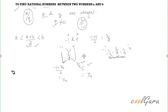For example, we have to find say 5 rational numbers between 3 and 4. So what I will do, I will simply multiply and divide 3 by 10. Similarly, multiply and divide 4 by 10.